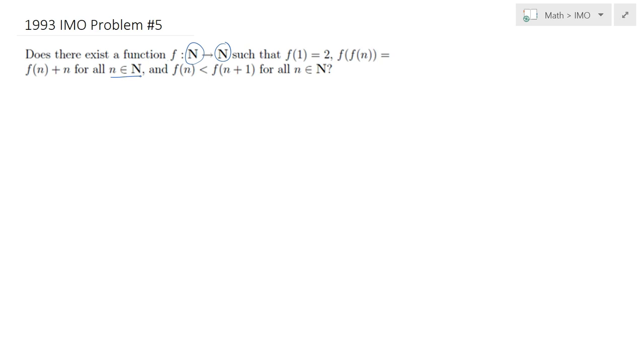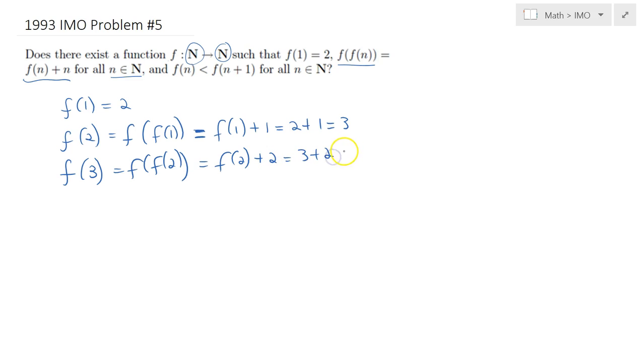So let's try a few values for this function. f(1) is given already. Using the definition we can easily find f(2) being f(f(1)), which equals f(1) plus 1, giving us 2 plus 1 equals 3.